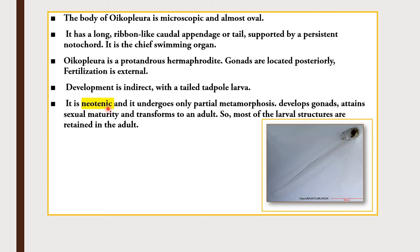Neoteny means the ability of young ones to reproduce — the larvae attain sexual maturity and are able to reproduce in the larval stage itself. This is called neoteny. These are the major important points of Oikopleura.